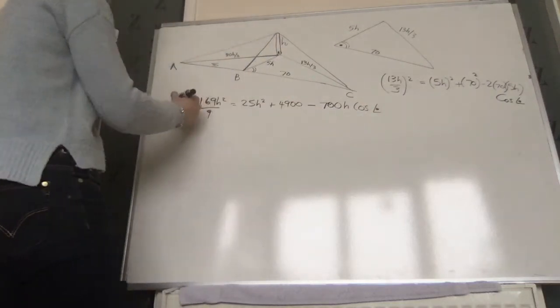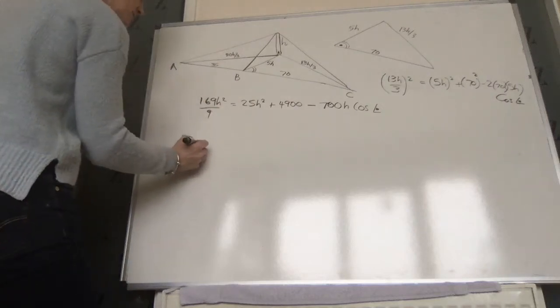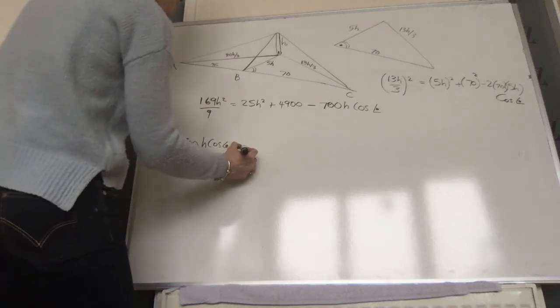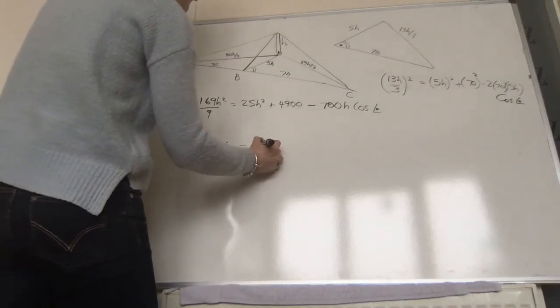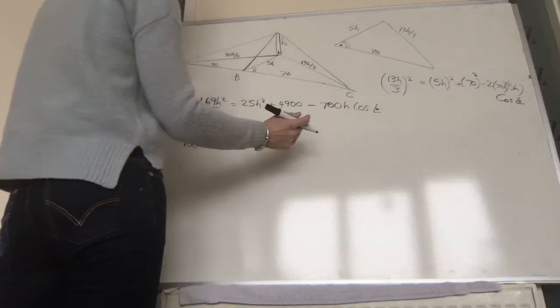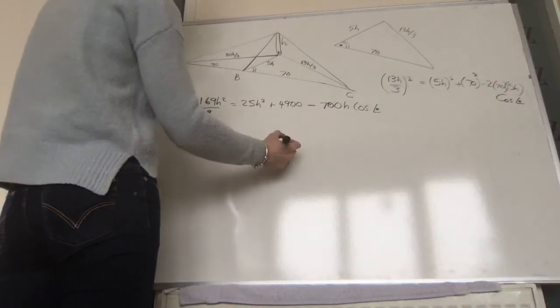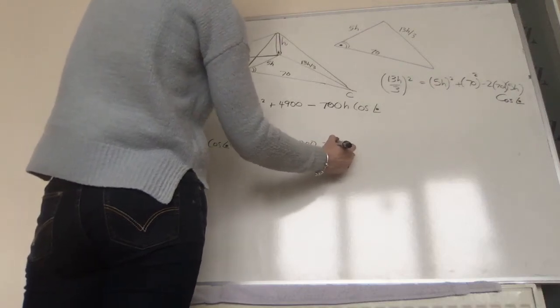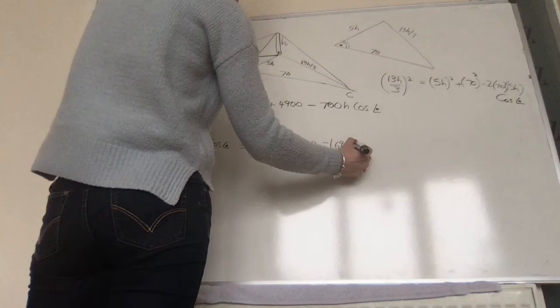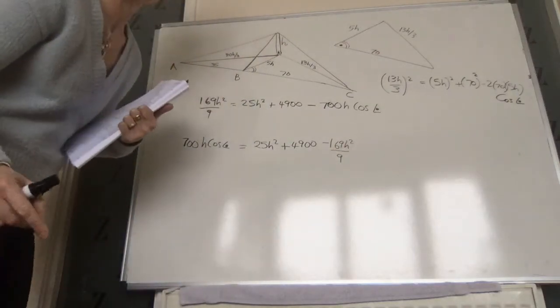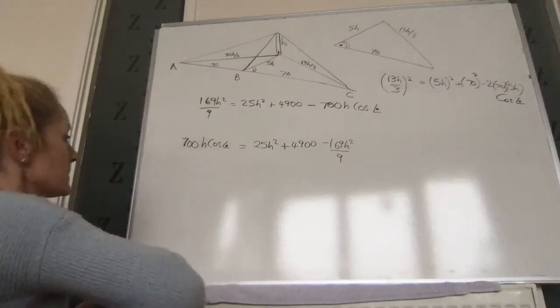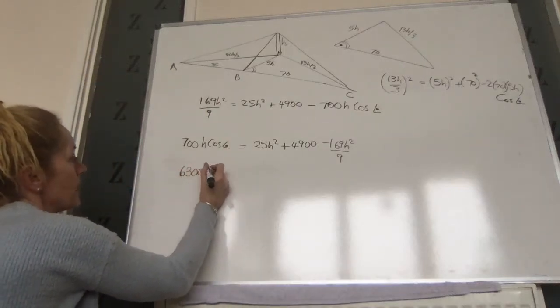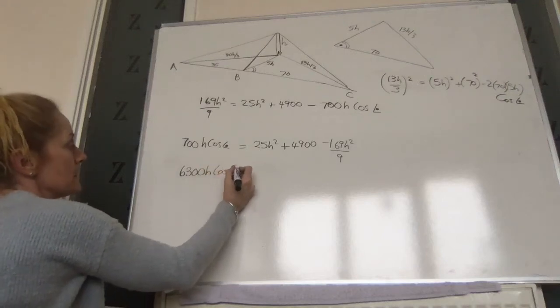Let's bring that to the other side by adding to both sides, so we get 700h cosine dot equals 25h squared plus 4900 minus 169h squared over 9. Multiply everything by 9, and we're going to get 6300h cosine dot.